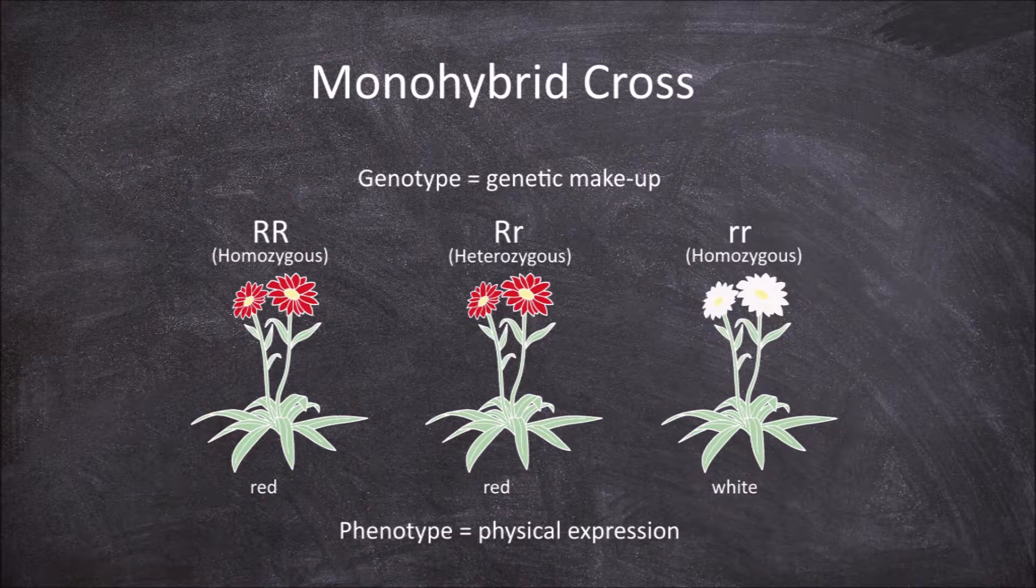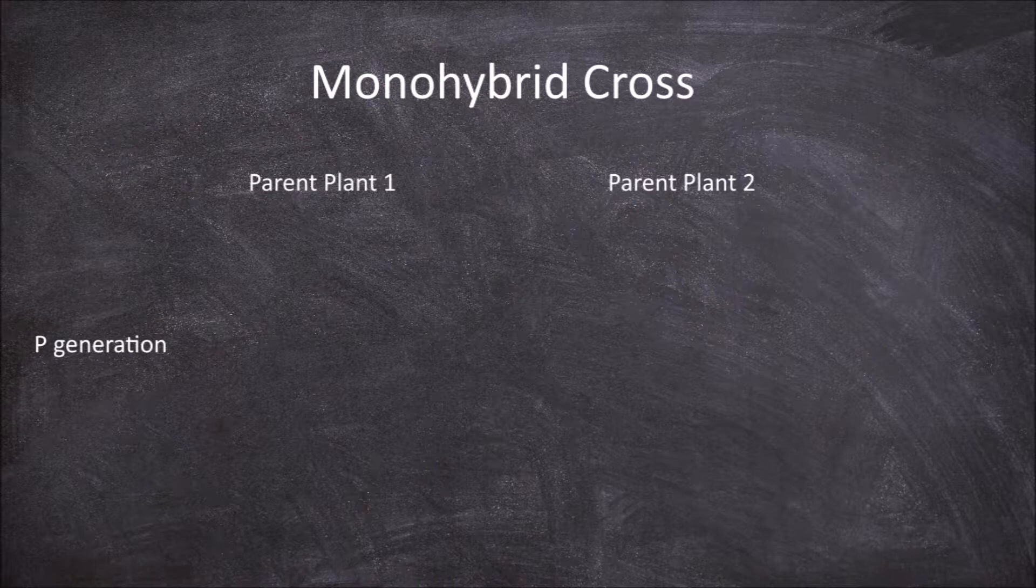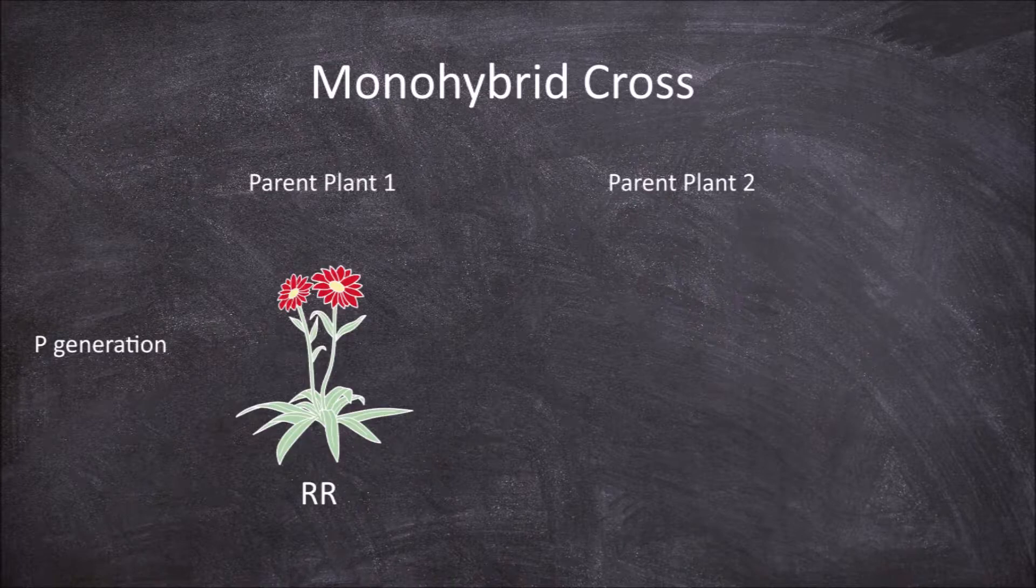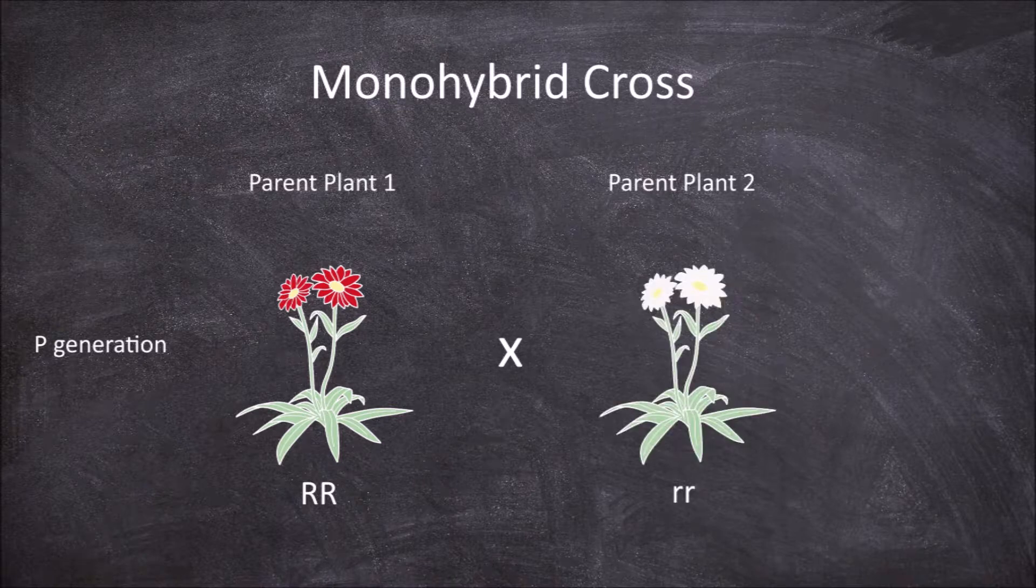For a monohybrid cross we want to cross two individuals based on this one trait of flower color. For example we could do a monohybrid true breeding cross of two homozygous parent plants. This is known as the P or parental generation. This cross would cross one that is homozygous dominant so has the alleles big R big R with one that is homozygous recessive having the alleles little r little r.